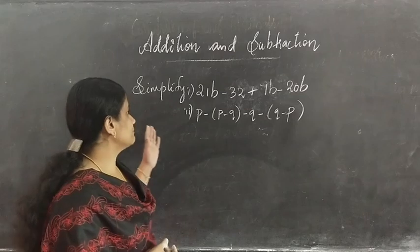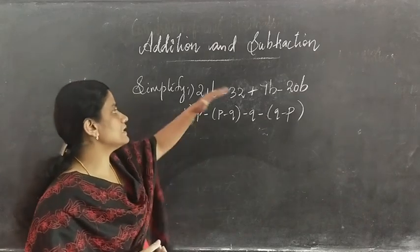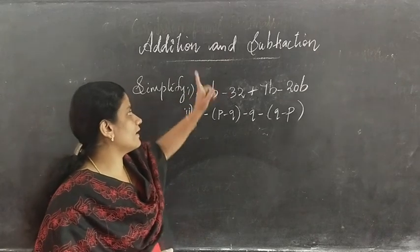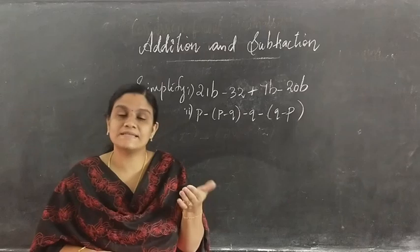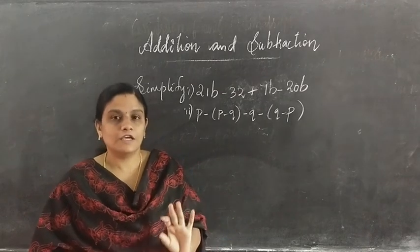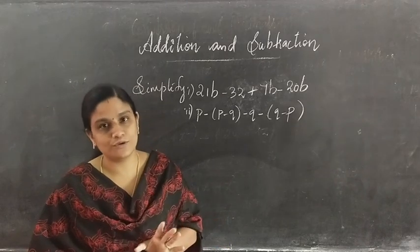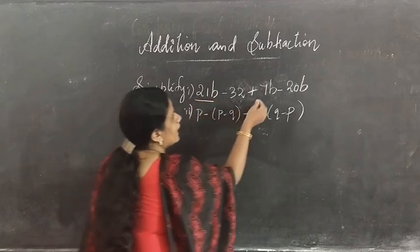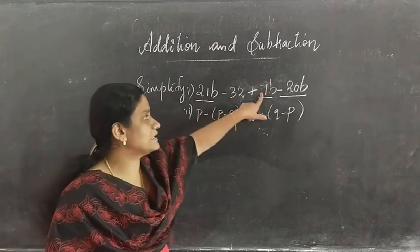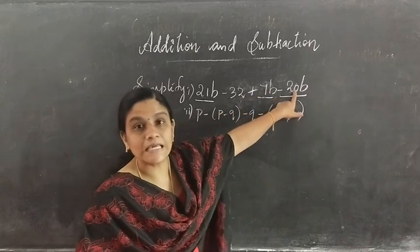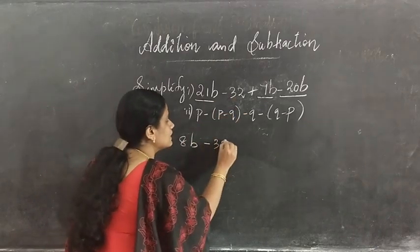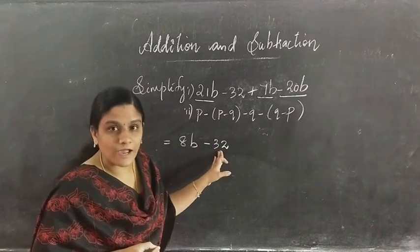The next question: simplify the given expression. For example: 21b minus 32 plus 7b minus 20b. There are like terms in this expression — we combine all like terms: 21b plus 7b minus 20b. That is 28b minus 20b, which gives 8b. The constant minus 32 stays as it is. So 8b minus 32 is the simplified form.